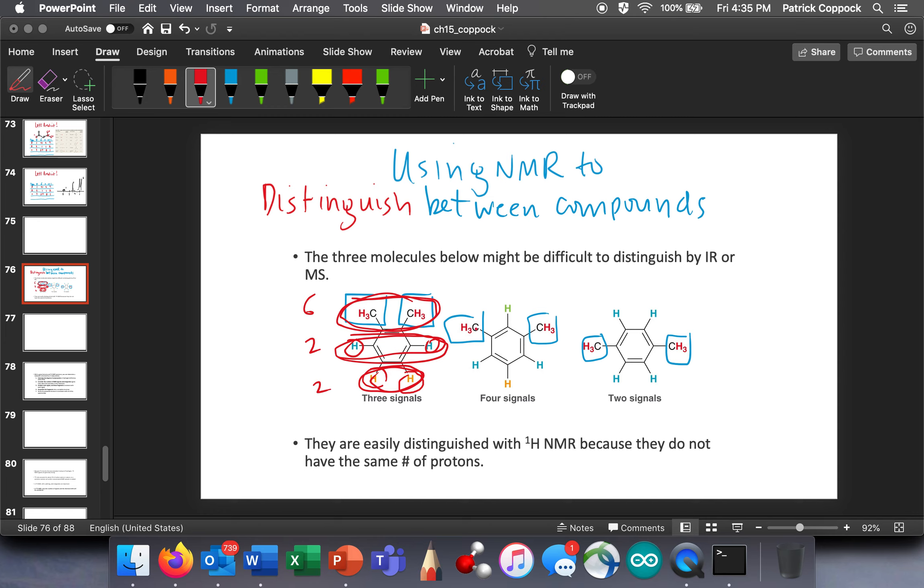Here, you're going to have four signals. Because here's one, that's one signal, and there are six there. Here's another signal, there's one. Here's another signal, and there's two. And here's another signal that's only one. Can you see how there are four different kinds of hydrogens on meta-xylene?